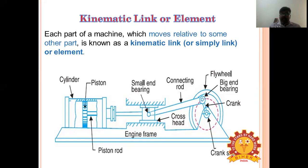Now, what is a kinematic link or element? Each part of a machine which moves relative to some other part is called a kinematic link. In a reciprocating steam engine, the crank, bearings, flywheel, connecting rod, piston rod, and cylinder are all parts. Due to the rotation of the crank, the connecting rod reciprocates, and because of that, the piston reciprocates inside the cylinder — this is called relative motion.